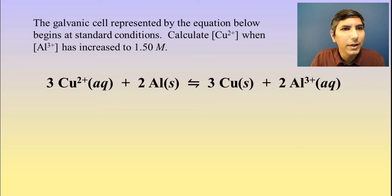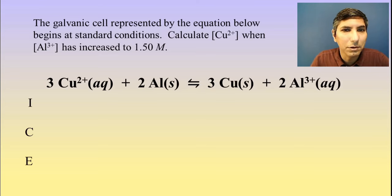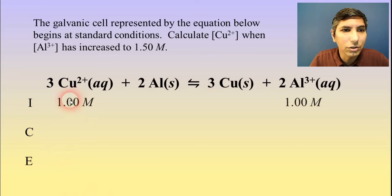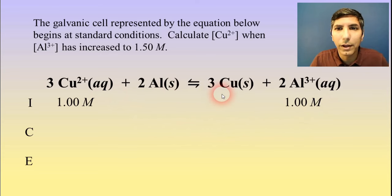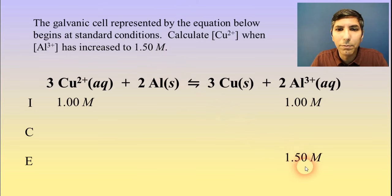Let's take a look at this example. The galvanic cell represented by the equation below begins at standard conditions. Calculate the concentration of copper 2+ ions when the aluminum ion concentration has increased to 1.50 moles per liter. For something like this, I strongly recommend using an ICE box — this represents Initial concentration, Change in concentration, and Equilibrium concentration. Since we're starting at standard conditions, both solutions are going to be one mole per liter. The solids are irrelevant since they don't have a concentration. The problem states that aluminum has increased to 1.50 molar, so that's the ending value.